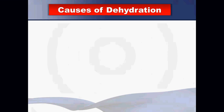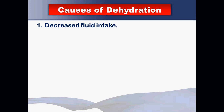The causes of dehydration fall into three main categories: decreased fluid intake, increased fluid loss, or fluid translocation between compartments. Decreased intake can result from thirst, starvation, deficiency of water sources, or an inability to take water independently.